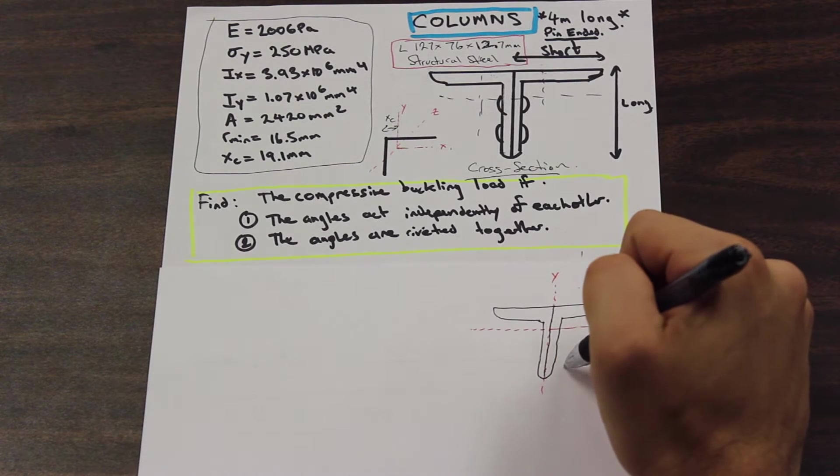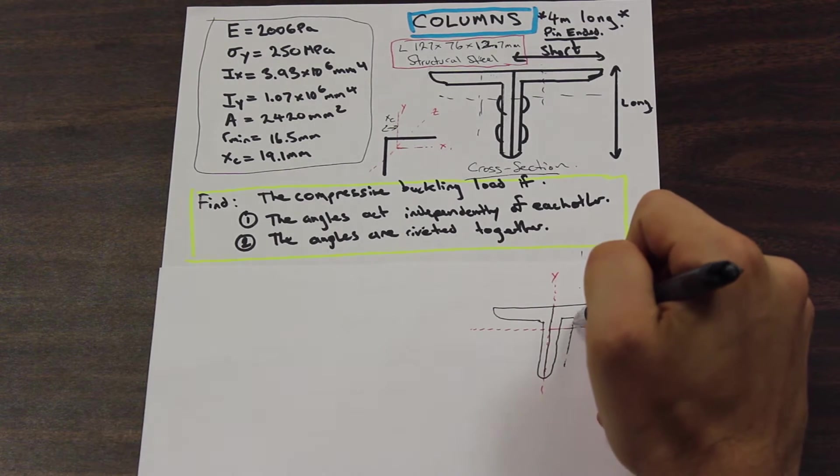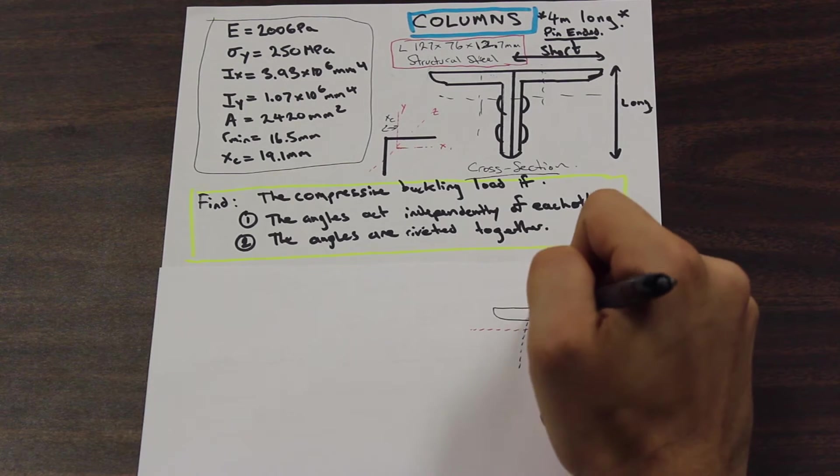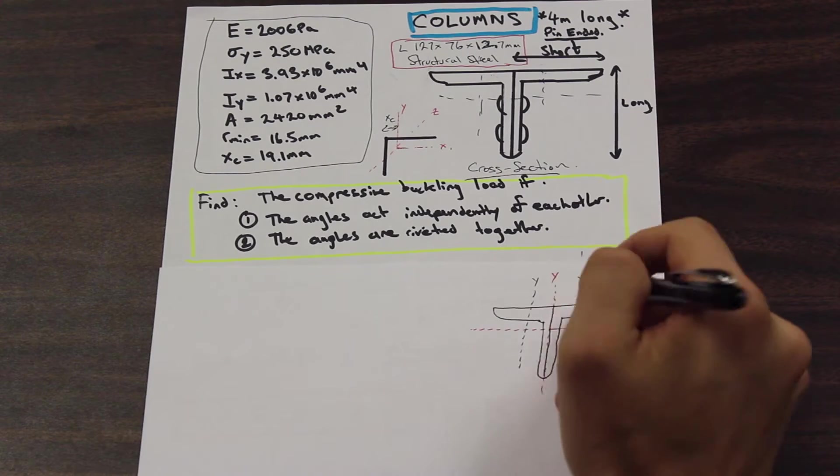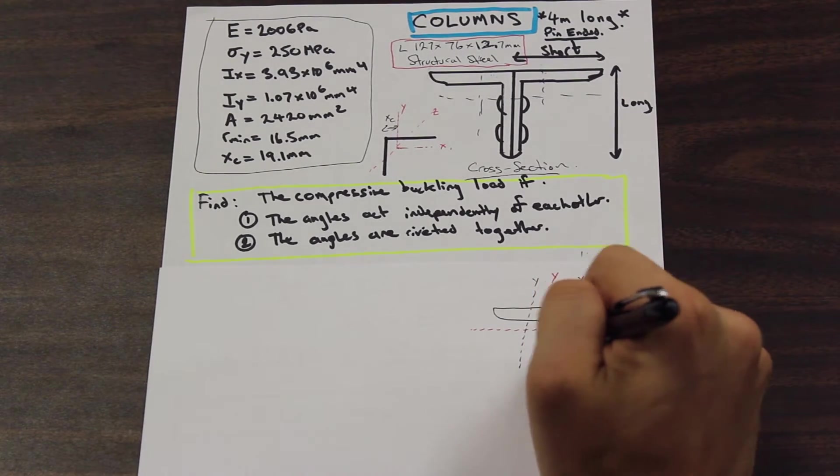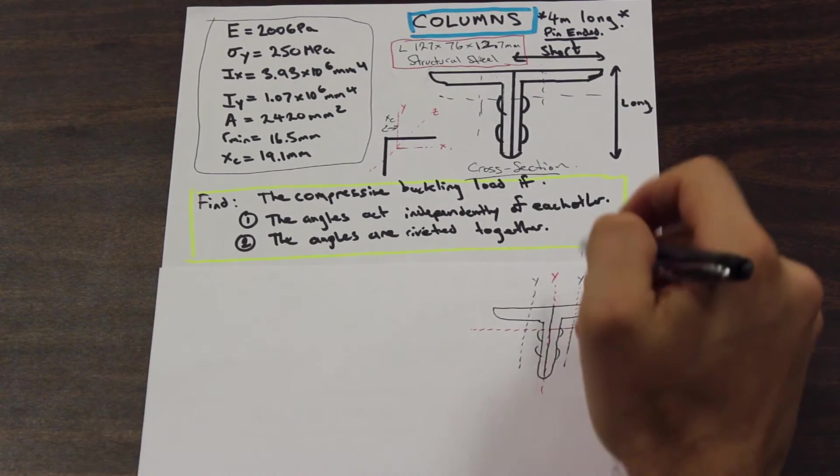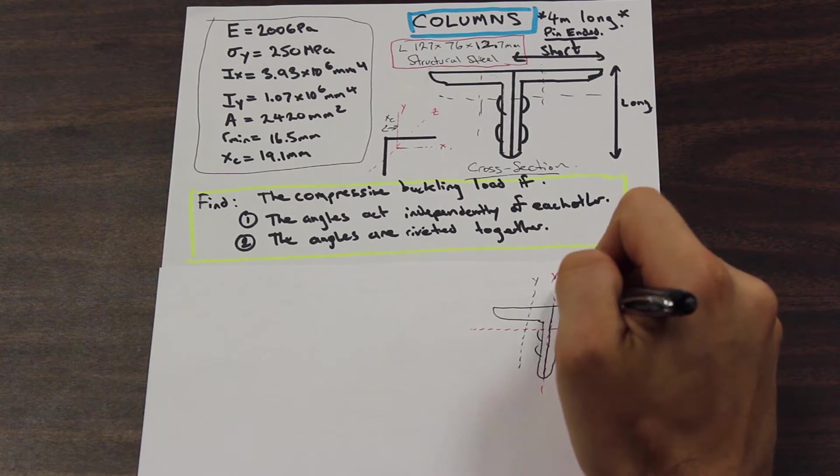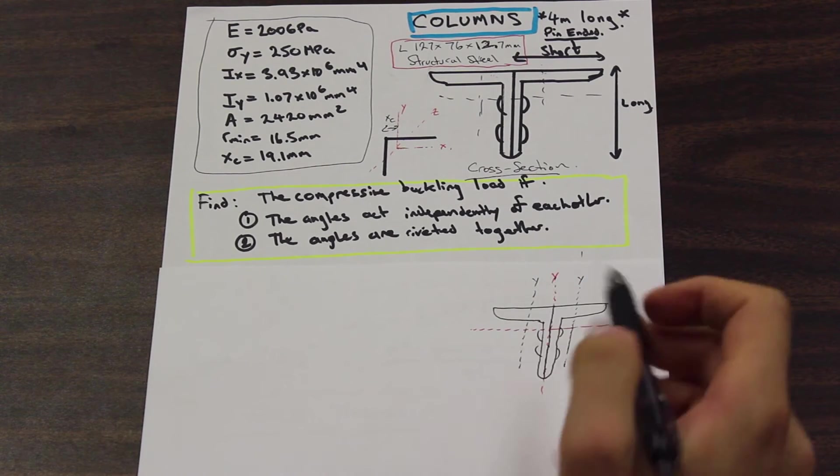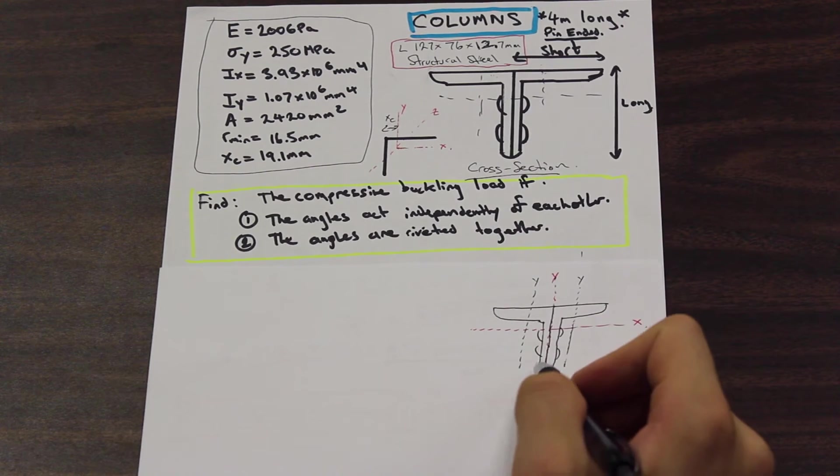For each angle, we have a moment of inertia here which is Y, and we have a moment of inertia here which is Y. But when they're connected through rivets here, the moment of inertia moves, and it moves to the center here. That's called the global moment of inertia, and that is what we need to find.